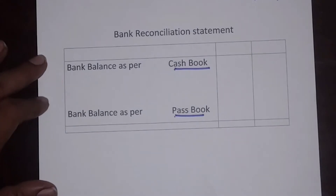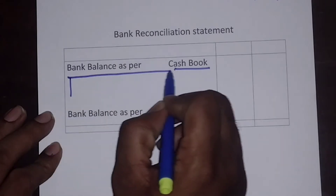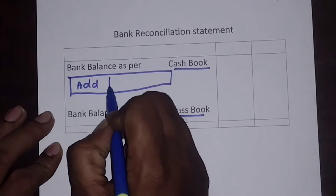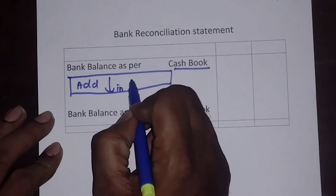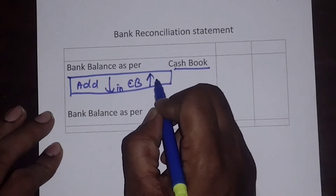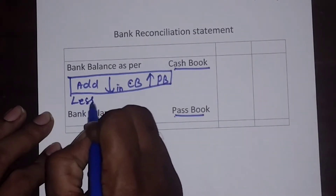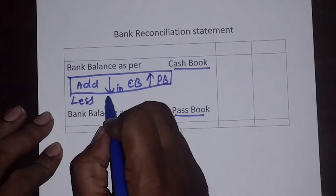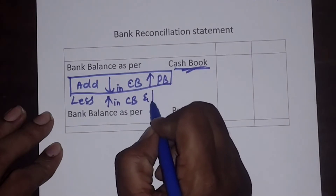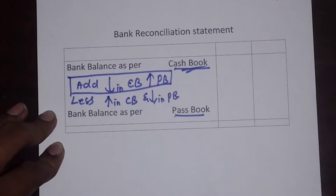Coming to another case: bank balance as per cash book is given. Entries to be added: decrease in first book, which is now cash book, and increase in second book, which is pass book. Entries to be deducted: increase in first book — cash book — and decrease in second book — pass book.